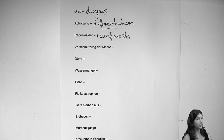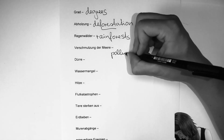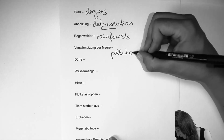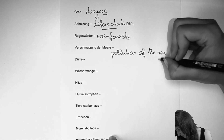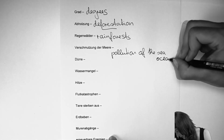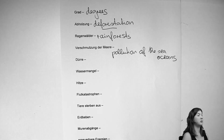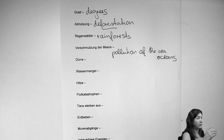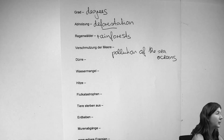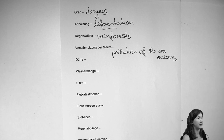We already had 'Umweltverschmutzung' — pollution. Now: pollution of the sea or the oceans. You may want to use 'ocean' instead of 'sea' every now and then in your exams, because repetition of words is also an issue. So try to find synonyms — words that mean the same thing.